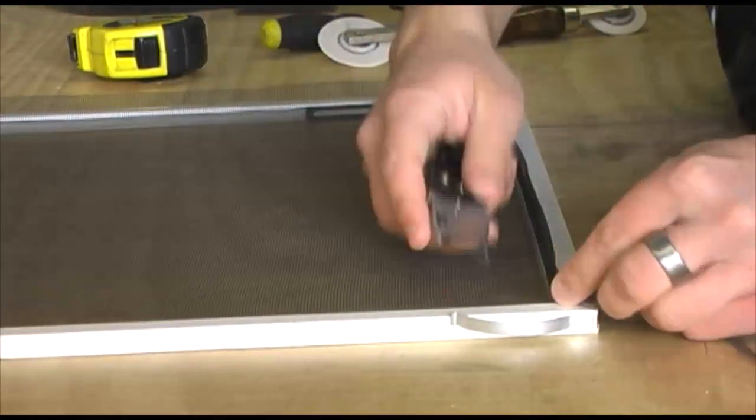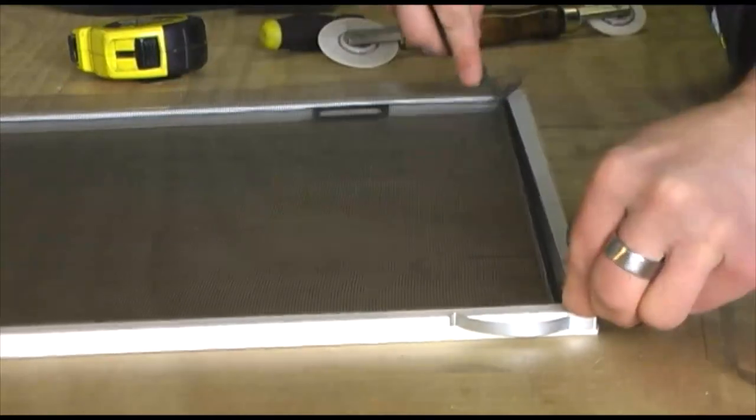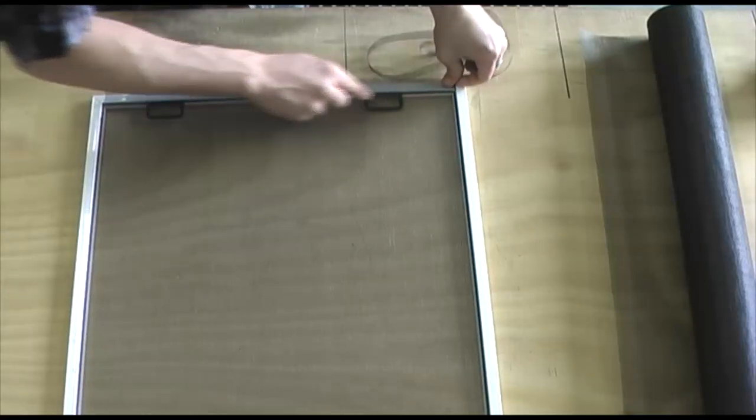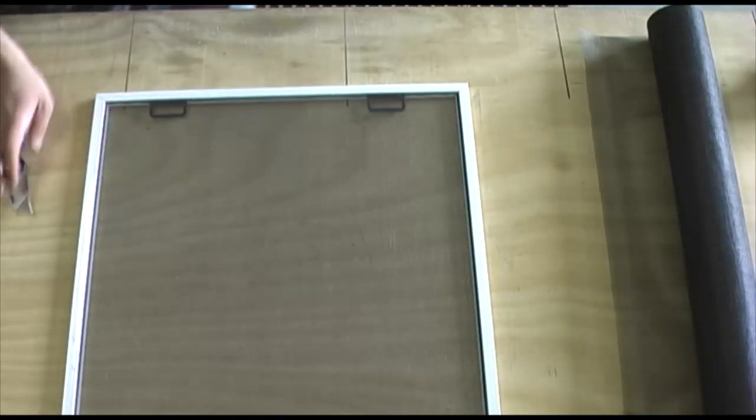Now, take your utility knife and begin cutting off the excess screen material on the edge all the way around the screen. This should be done right above the spline. Be careful though not to cut the spline or the screen material.